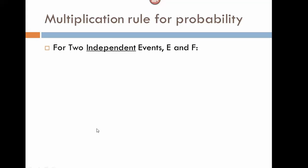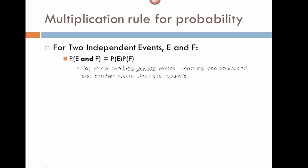For two independent events E and F, the probability that E is followed by F — meaning event E occurs, and then on the second trial event F occurs — is equal to the product of their individual probabilities. The key word here is independent events, meaning one occurs and then another occurs separately.